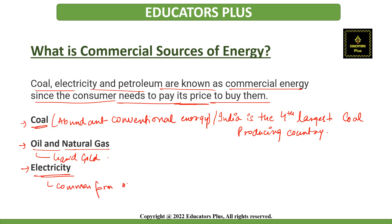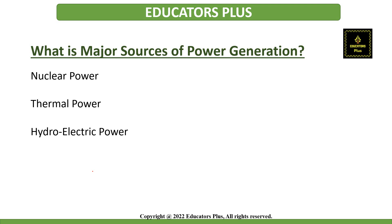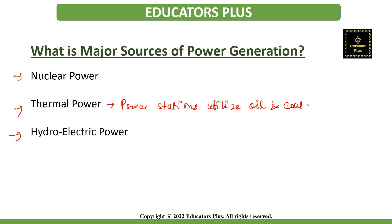Electricity is a common form of energy used for domestic as well as commercial purposes. Its main utilization is in electrical appliances like fridges, TVs, washing machines, and air conditioners. The major sources for power generation are nuclear power, thermal power, and hydroelectric power. Thermal power is generated at various power stations by utilizing oil and coal. It is a vital source of electric current, and power stations burn large amounts of fossil fuels to heat up water and produce steam.